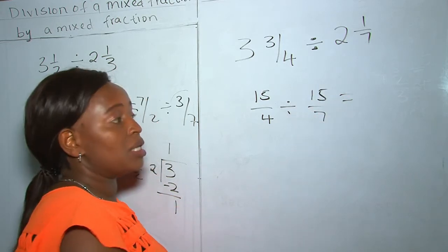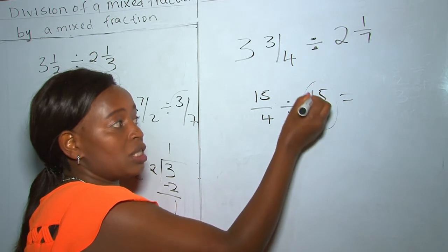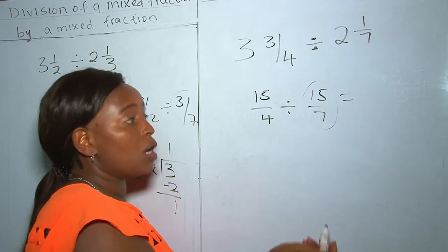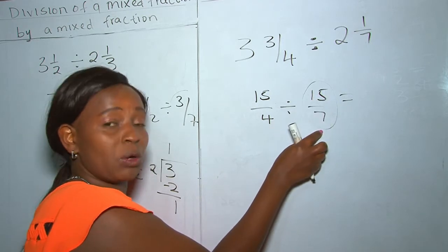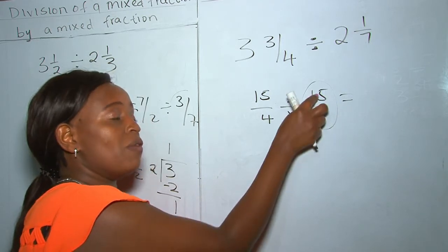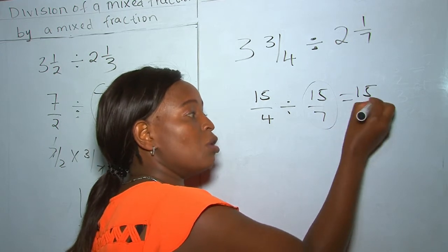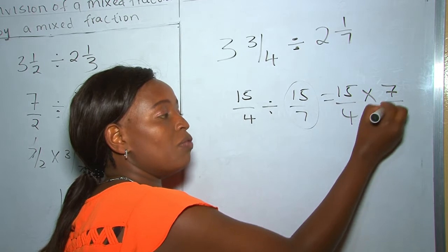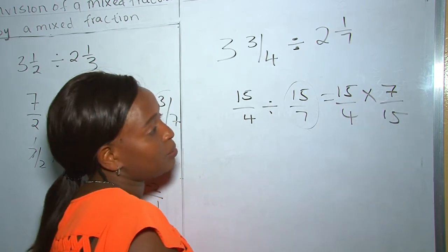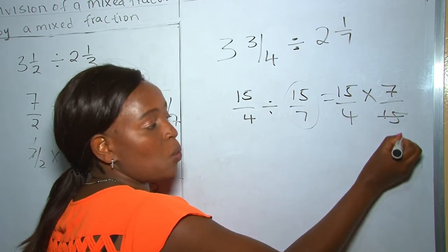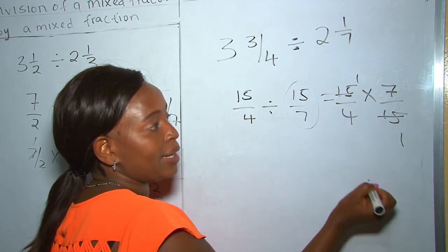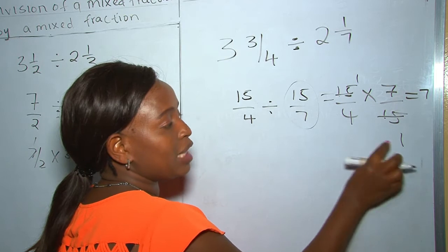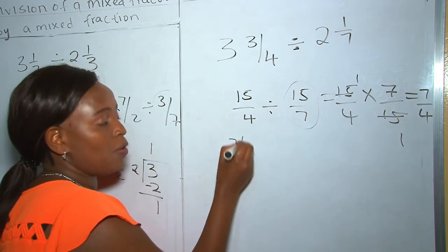The next step is to get the reciprocal of our second fraction. The reciprocal of 15 over 7 is 7 over 15. Therefore it becomes 15 over 4 multiplied by the reciprocal, which is 7 over 15. We cross-cancel 15 by 15, giving 1 by 1. So 7 times 1 is 7, and 4 times 1 is 4.